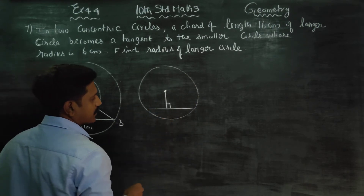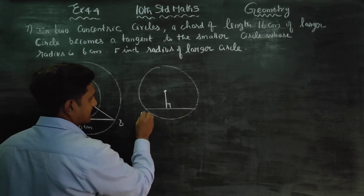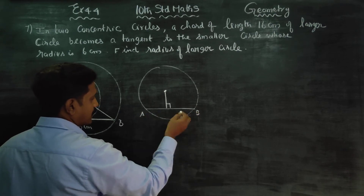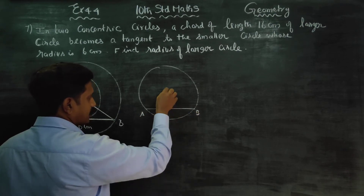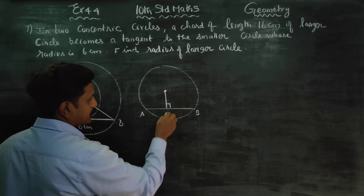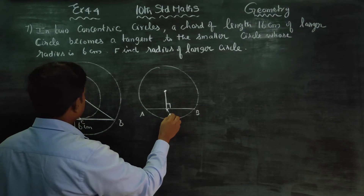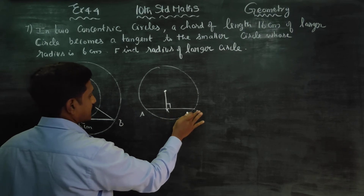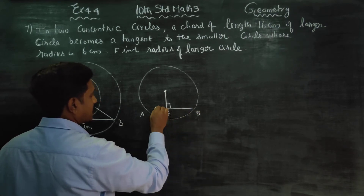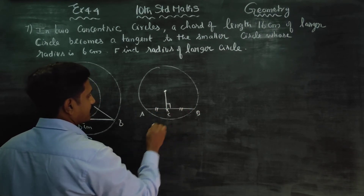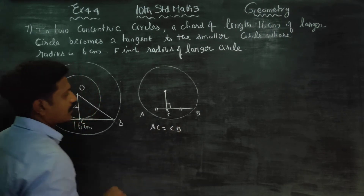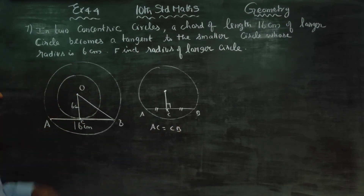The perpendicular from the center of the circle to the chord bisects it. Bisecting means it divides equally — AC is equal to CB. That is the concept.